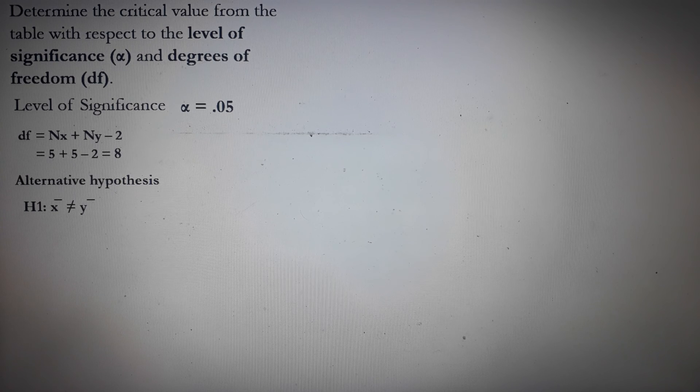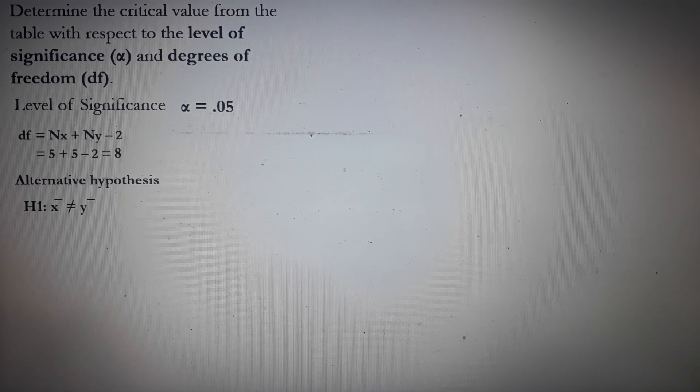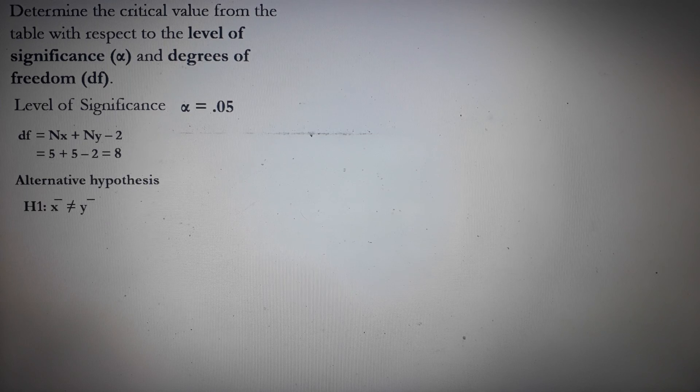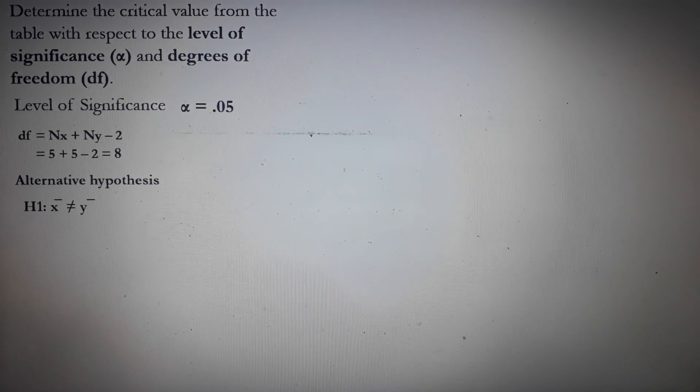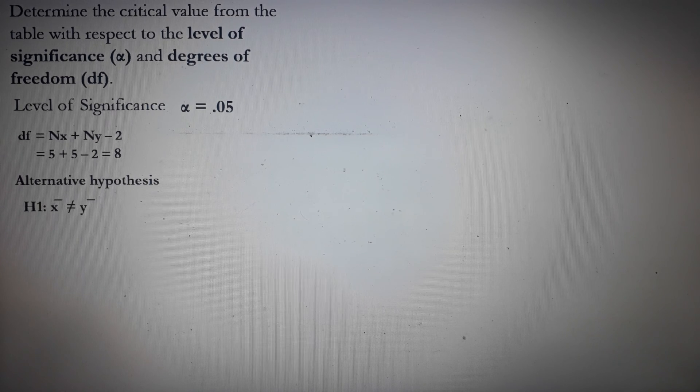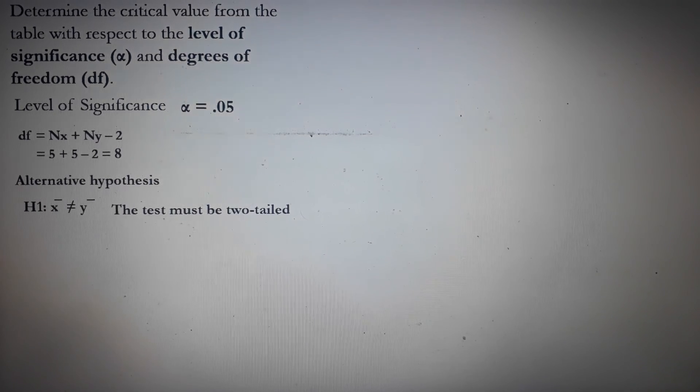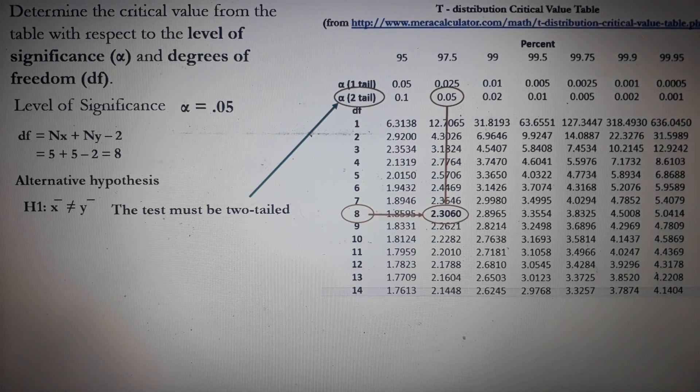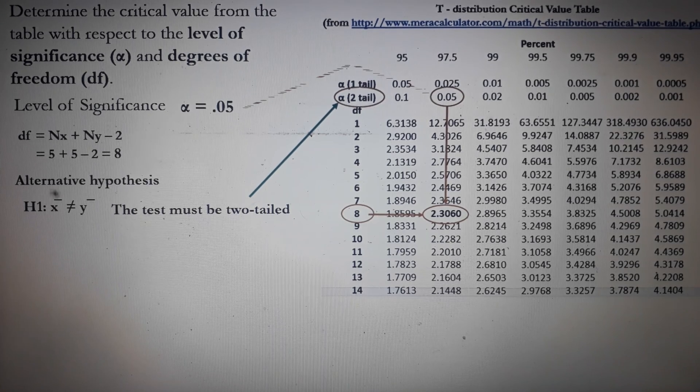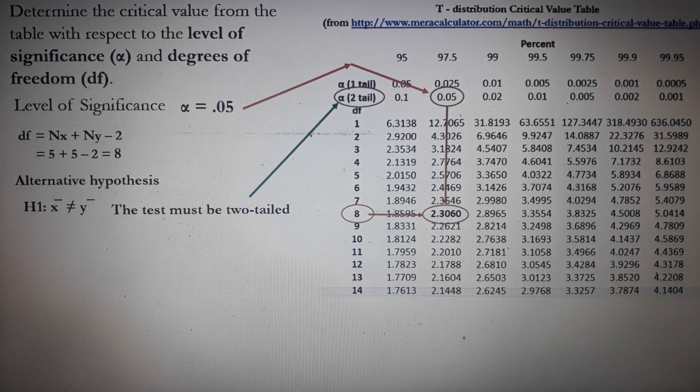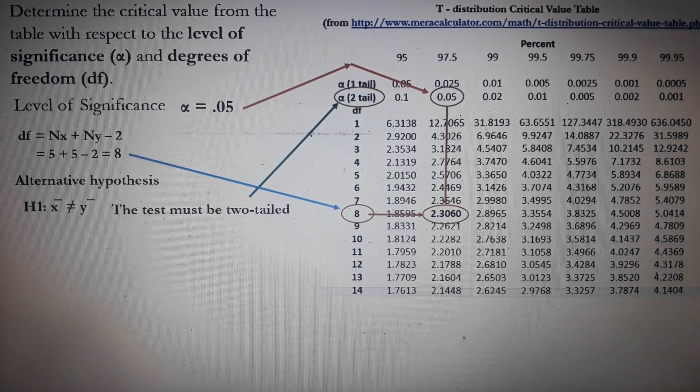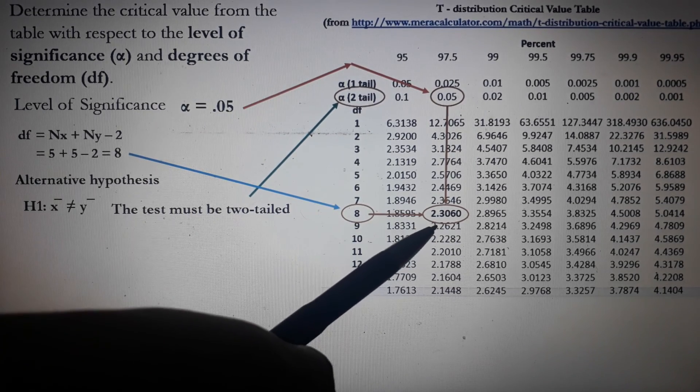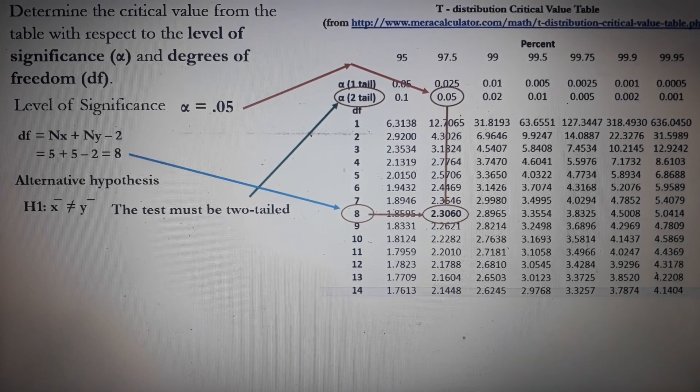Let's consider the alternative hypothesis. Since in our alternative hypothesis, the statement is that the mean of x is not equal to the mean of y. Therefore, there's no direction. You're not saying that it is less than or greater than. So it means that the test is two-tailed. So from our table, that's two-tailed. So we need to indicate that. The alpha of .05 and the degrees of freedom of 8. So the points meet at a number which is 2.3060 and that is our critical level.